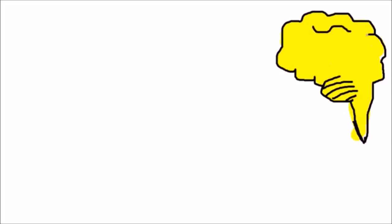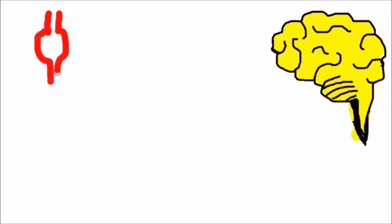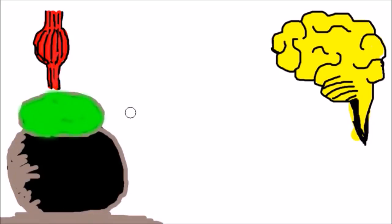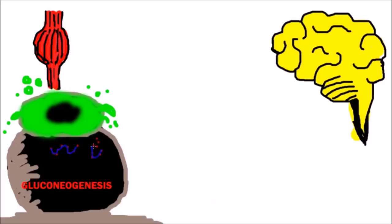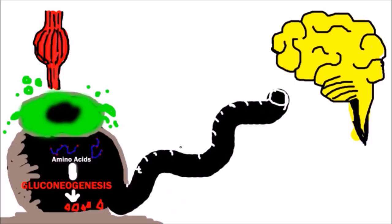Instead of getting glucose from our food, the brain will get glucose from our body's stored protein in a process called gluconeogenesis, which creates glucose from our amino acids so the brain can continue to receive glucose for energy.